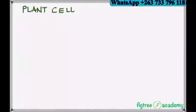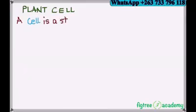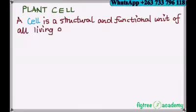Plant cell. In this lesson we are going to explain the structure of a plant cell. There are two important types of cell we are going to look at: plant cell and animal cell. We will compare these in the next lessons. So I will first start by defining a cell.